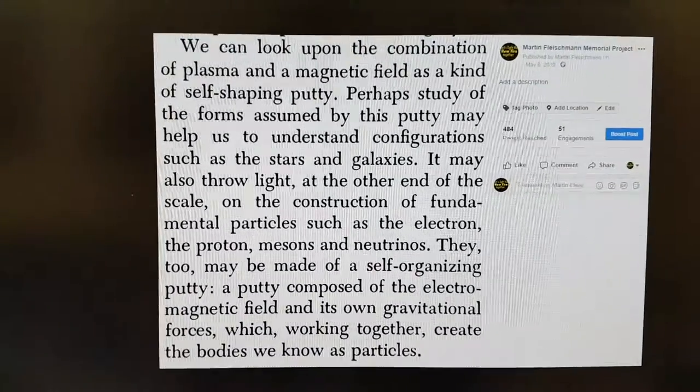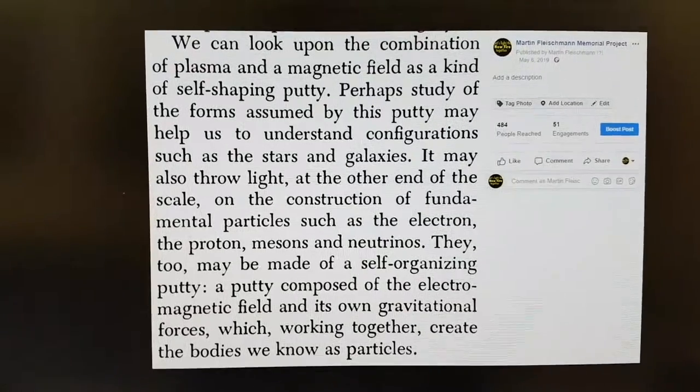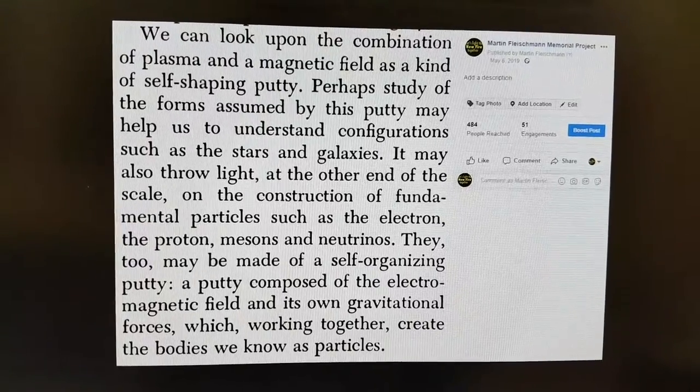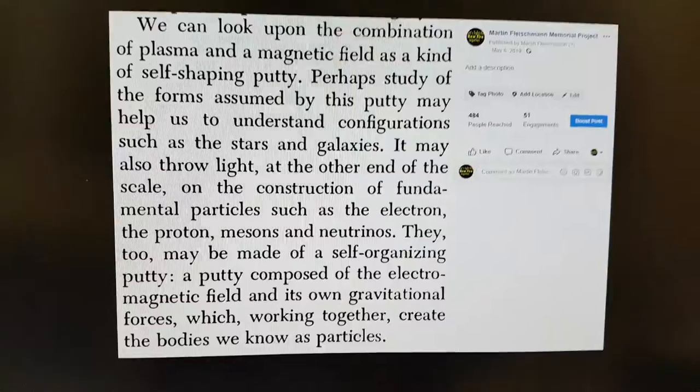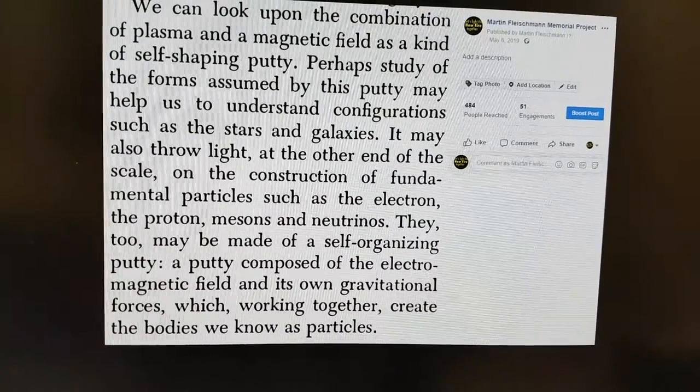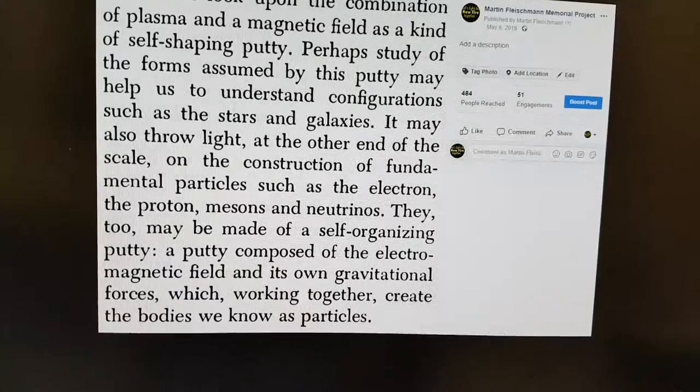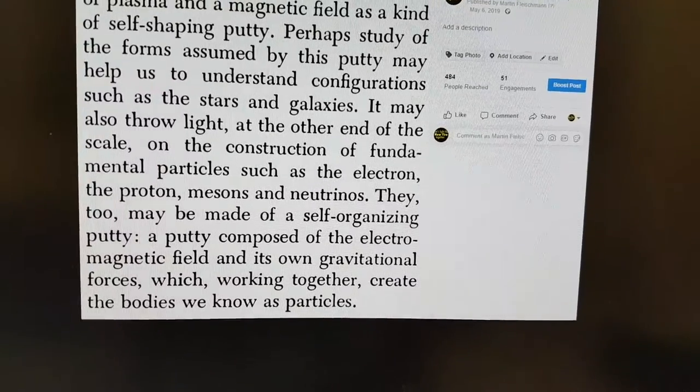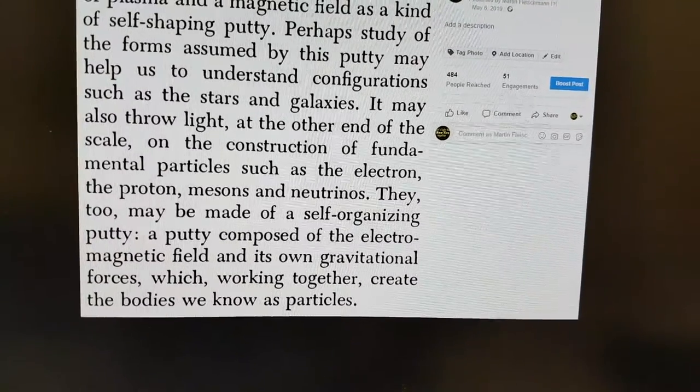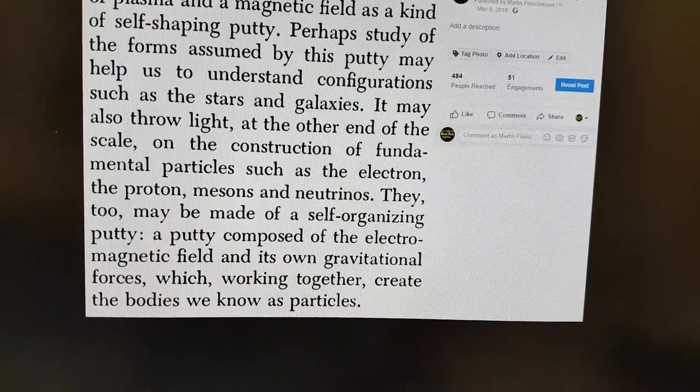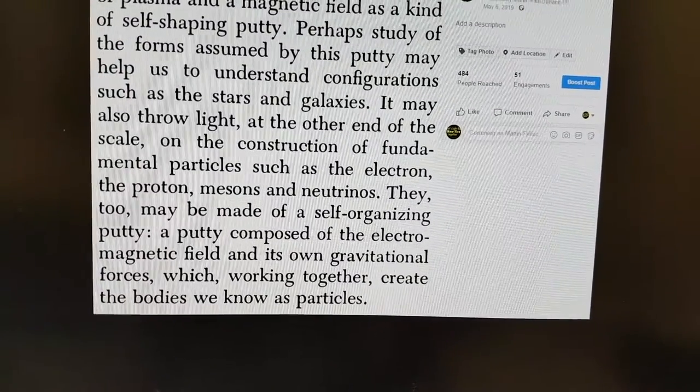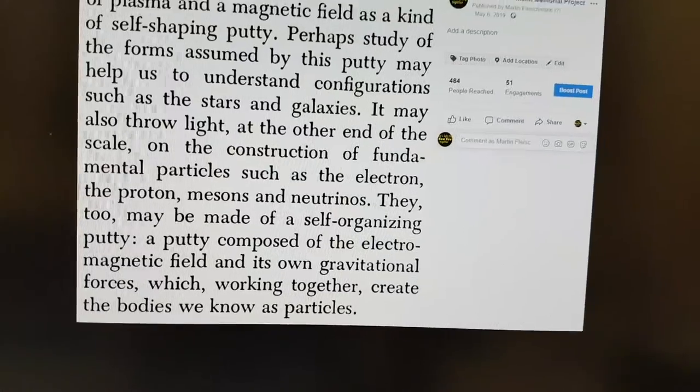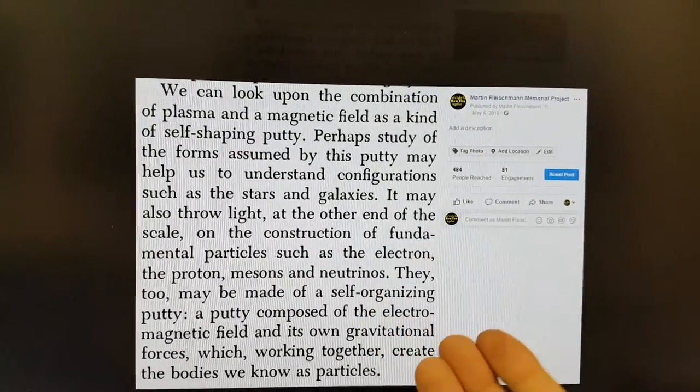This is the closing argument in his paper from 1957. We can look upon the combination of plasma and magnetic field as a kind of self-shaping putty. Perhaps study of the forms assumed by this putty may help us to understand configurations such as the stars and galaxies. It may also throw light at the other end of the scale on the construction of the fundamental particles such as the electron, the proton, mesons and neutrinos. They, too, may be made of self-organizing putty, a putty composed of the electromagnetic field and its own gravitational forces which, working together, create the bodies we know as particles.